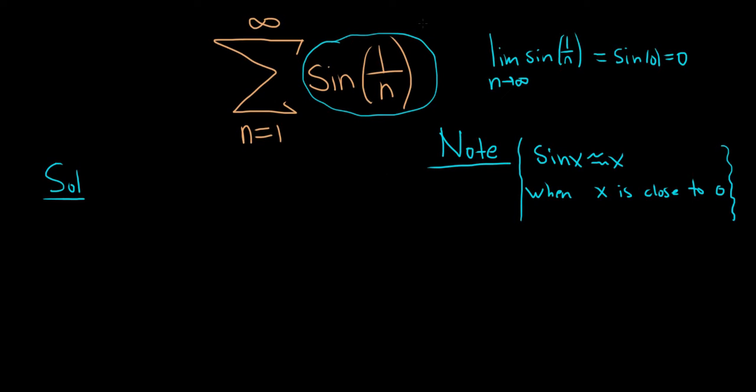Why? Because then this is your a sub n, and then your b sub n for your limit comparison is 1 over n. So whenever you have sine of 1 over n, just know that this is going to be your b sub n for limit comparison because sine x is approximately equal to x whenever x is close to zero.